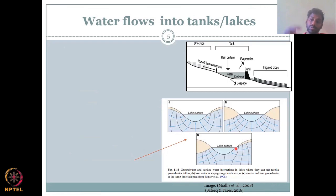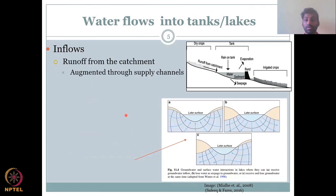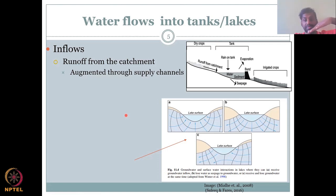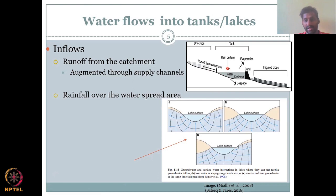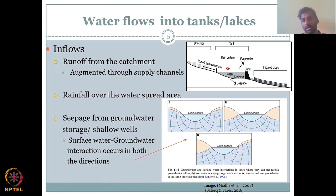Water flows into tanks through multiple pathways. Channelized water can come in, but also direct surface runoff — water that hits the land surface and cannot infiltrate flows as runoff into the tank. Direct rainfall falling on the tank's water spread area is another inflow. Depending on the water spread area, a large area of rainfall can be captured. Some groundwater loss and evaporation also occur, but the stored water can be used later for irrigation.